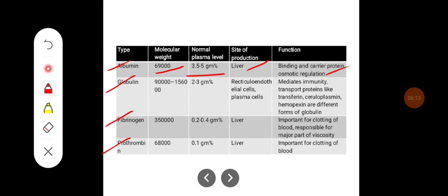Globulin molecular weight is between 90,000 to 1.5 lakhs. Its concentration ranges between 2 to 3 gram percent. It is produced by reticuloendothelial cells and plasma cells and is important for mediation of immunity. It acts as transport proteins such as transferrin, ceruloplasmin, and hemopexin.